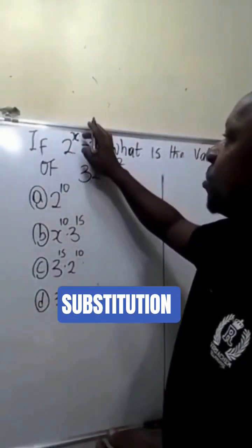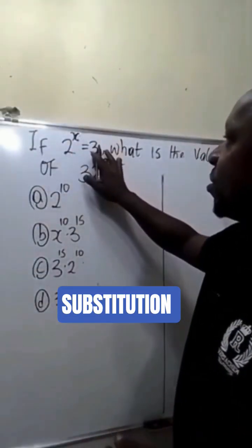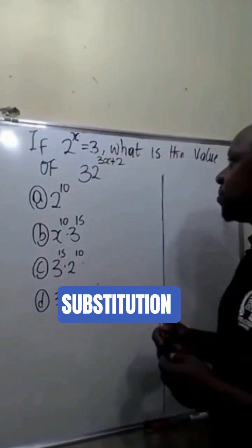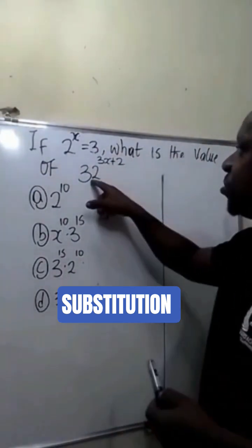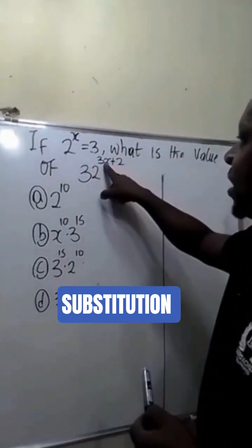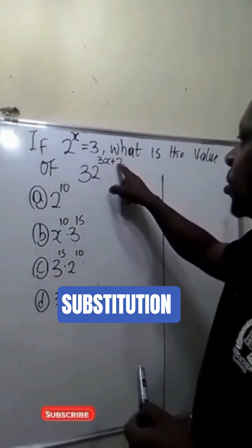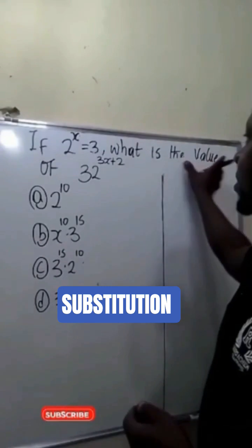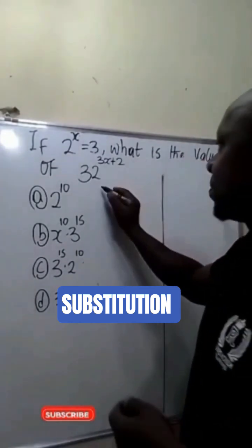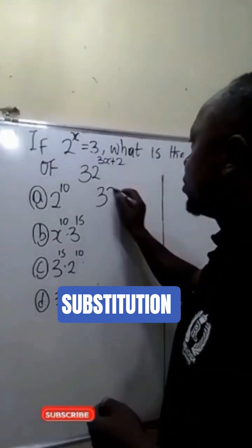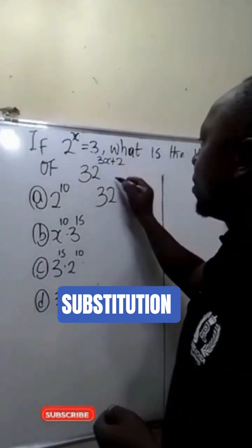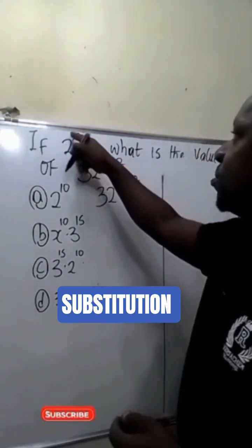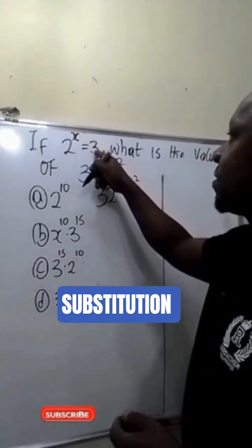If 2 raised to power x is equal to 3, what is the value of 32 raised to power 3x plus 2? We are asked to find the value of 32 raised to power 3x plus 2, if 2 raised to power x is equal to 3.